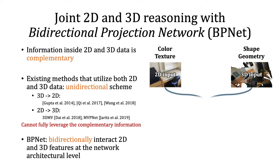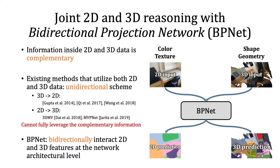In this work, we propose to bidirectionally interact and fuse 2D and 3D features with a bidirectional projection network, named BPNet. By doing so, the information inside these two visual domains can flow bidirectionally at the network architecture level to combine the complementary information for both 2D and 3D understanding.